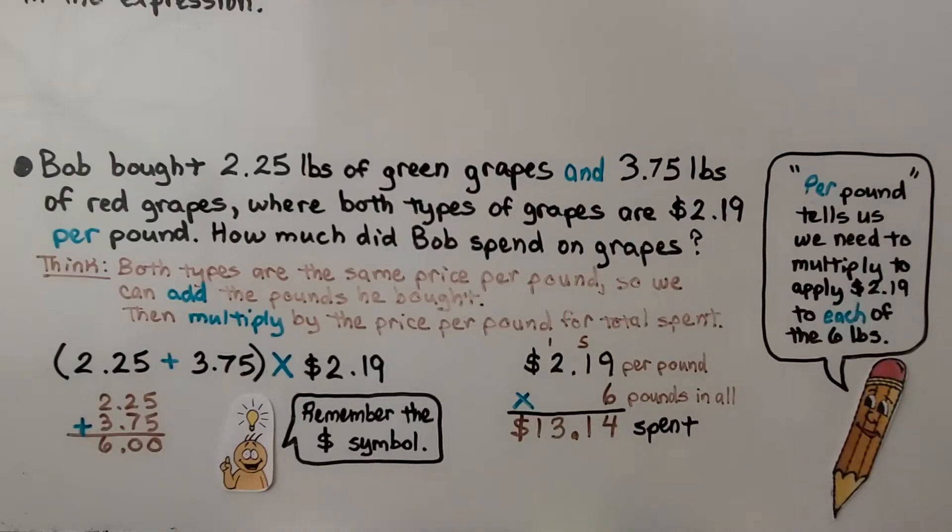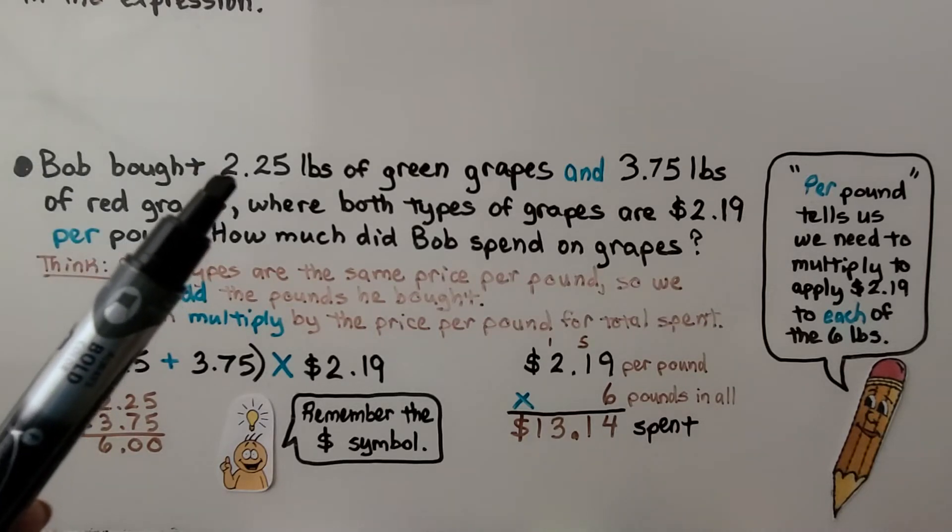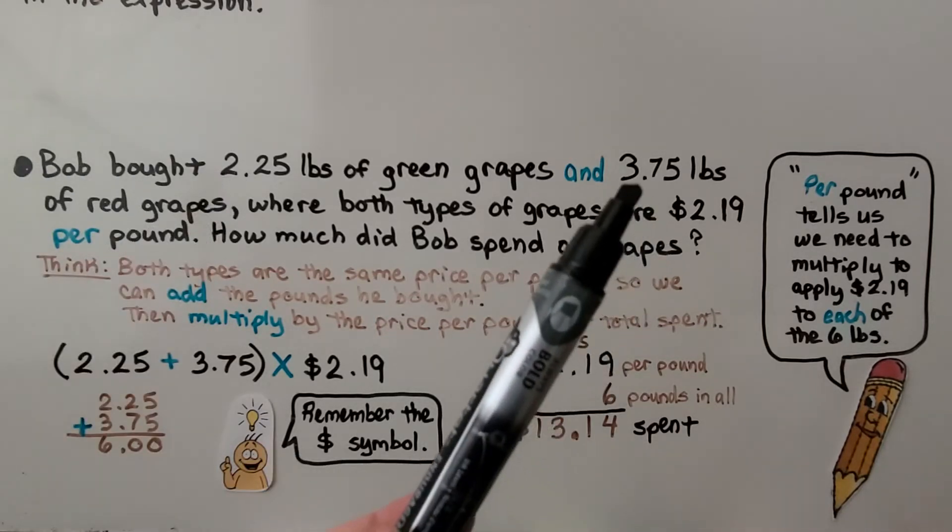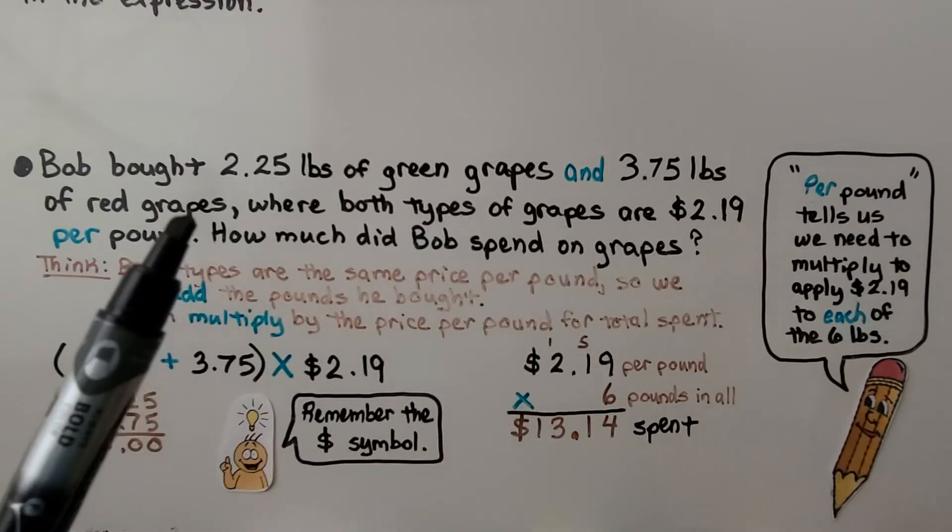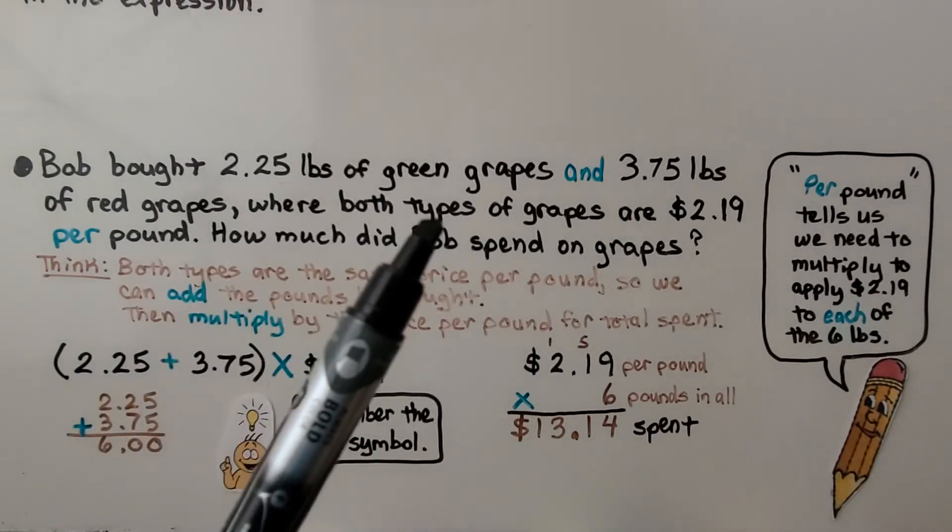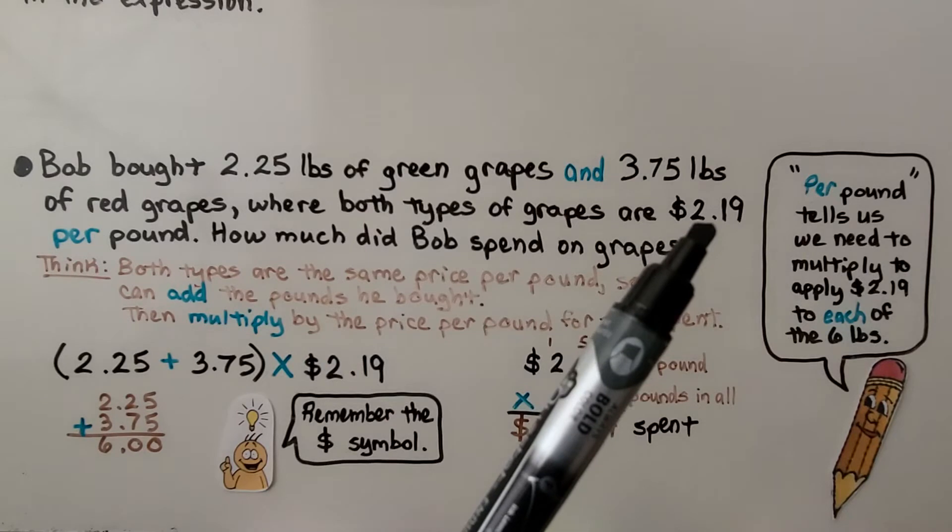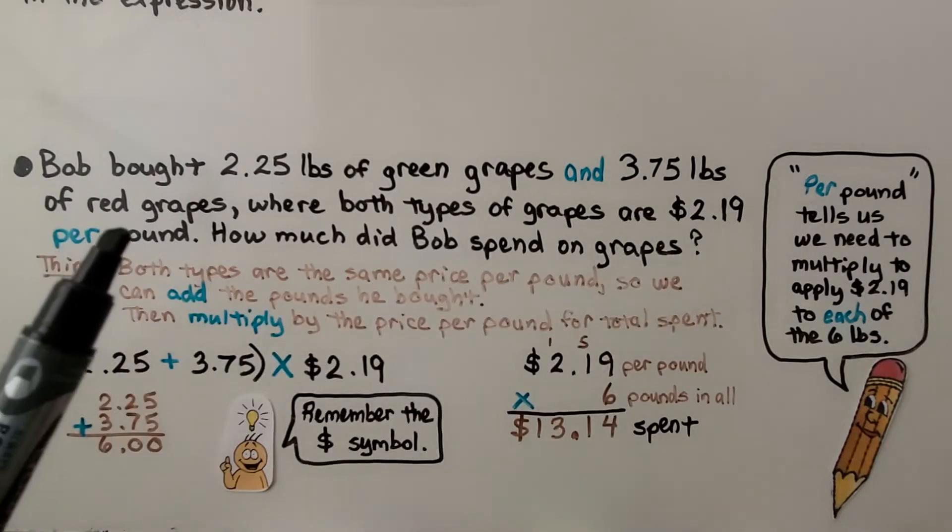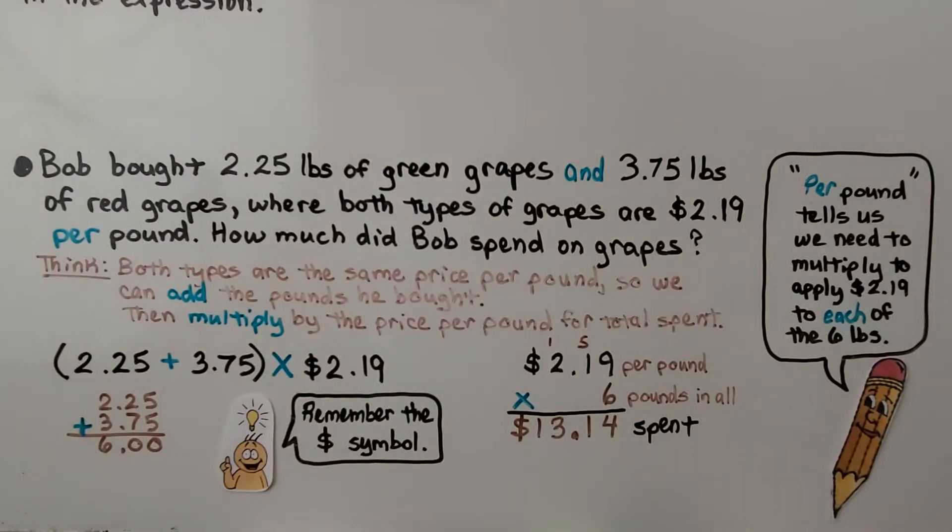So here we have a word problem. We can read it, figure out what information is important, write an expression and then solve it. Bob bought 2 and 25 hundredths pound of green grapes and 3 and 75 hundredths pound of red grapes. Both types of grapes are $2.19 per pound. How much did Bob spend on grapes?